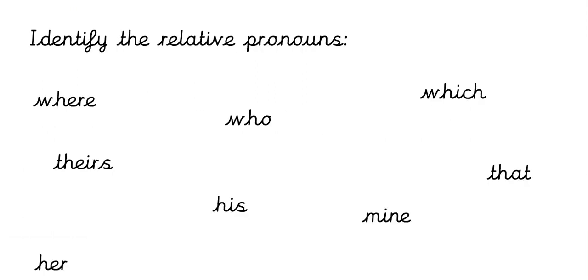Can we identify the relative pronouns here? I've given you a clue because I have already said them. We've got: where, theirs, her, his, who, which, that and mine. Can you identify what kind of pronoun the other words are too? Just think about it in your heads. Our relative pronouns are where, who, which and that. The other pronouns — her, theirs, his and mine — are possessive pronouns. Well done if you managed to identify those.